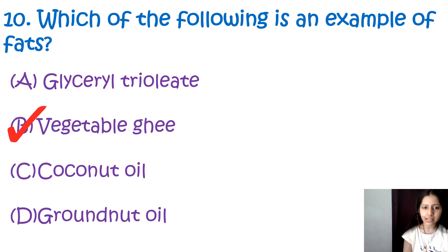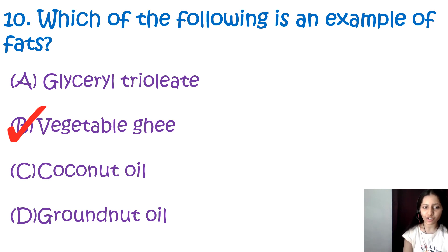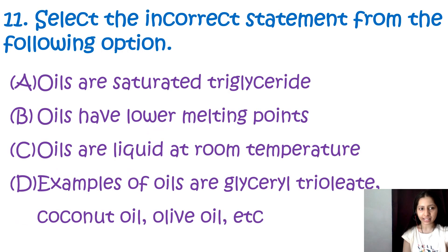Glycerol triolate, coconut oil, and groundnut oil are examples of oils since they are liquid at room temperature. The correct option is B.